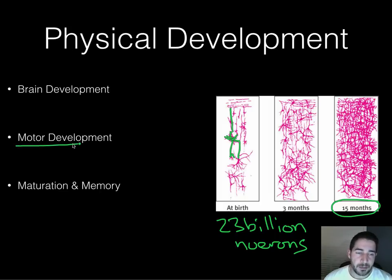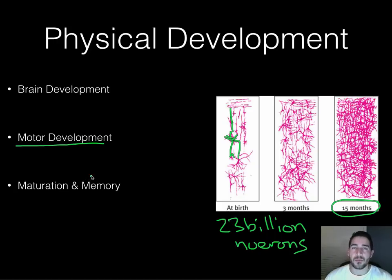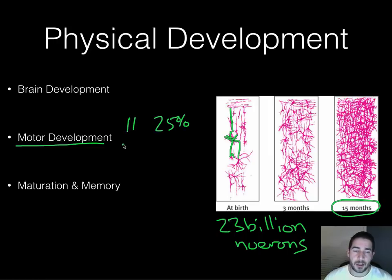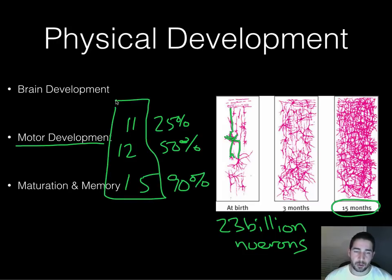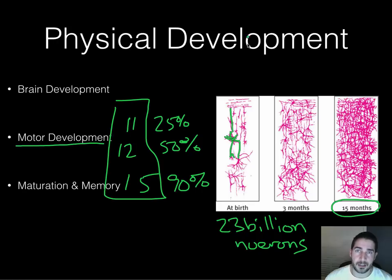Motor development with babies tends to go in a pretty specific order, almost universally — babies tend to do the same things around the same times. For instance, with walking: at about 11 months, about 25% of babies can walk. Within a week after 12 months, you've got 50% — over half of babies can walk within one week of their first birthday. By 15 months, 90-plus percent of babies can walk. Motor development tends to go in stages and it's pretty consistent across the board.